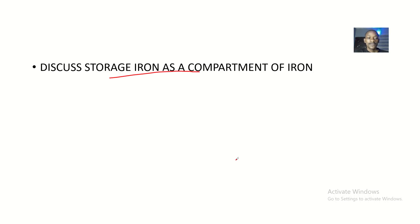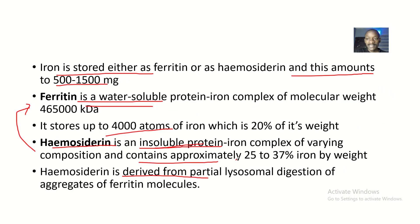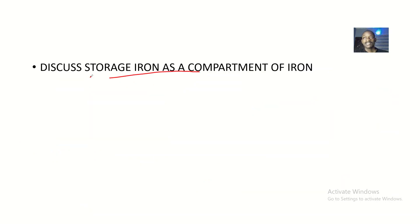That's it about the storage compartment — storage iron as a compartment of iron. It's as simple as this, just talking about the various forms that iron can be stored. You should note the amount of iron available in this form, note ferritin, note hemosiderin, and the characteristics listed for each form of iron storage. See you guys in the next tutorial.